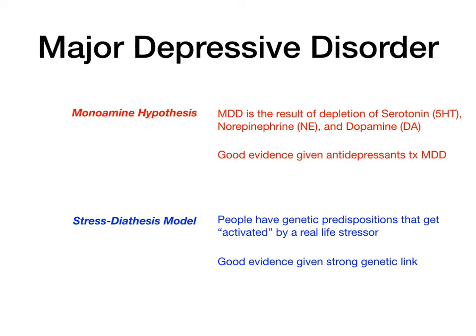These two hypotheses are probably both, to some extent, correct for major depressive disorder, and you should be familiar with this pathophysiology. Now let's get into the DSM-5 criteria. For those new to psychiatry, diagnoses are made through the DSM, and the current edition is the DSM-5.